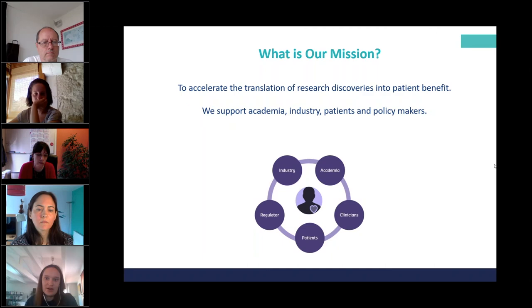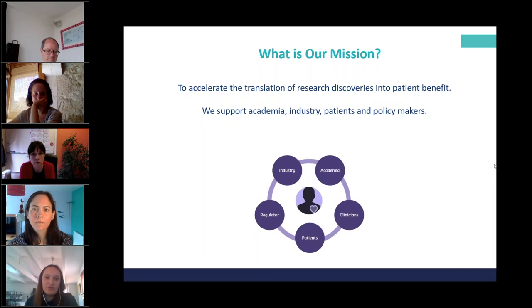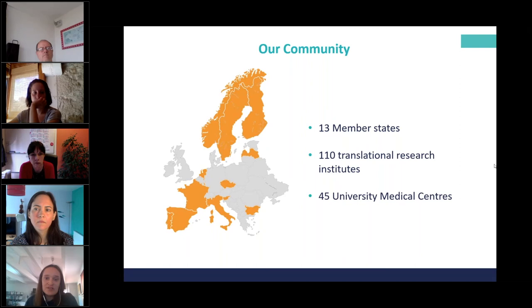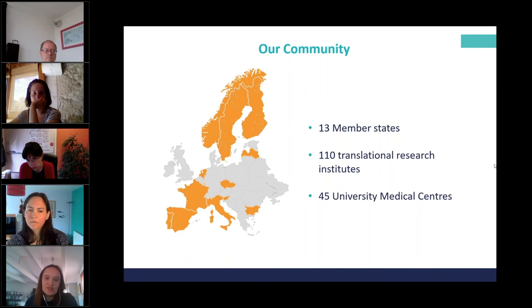EATRIS is trying to address as much as possible the translational barriers that prevent research discoveries from ever becoming a benefit for patients. Our mission is very transdisciplinary because for translational research to be successful, one cornerstone is multidisciplinary teams. In every step of our work, we collaborate with multiple stakeholders: academia, industry, patients, and policymakers. Currently, our community is composed of 13 member states and we are a distributed infrastructure composed of 110 translational research institutes, of which 45 are university medical centers.